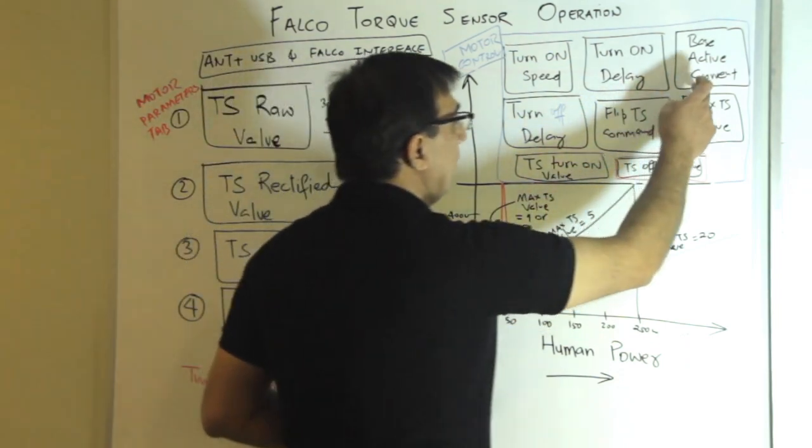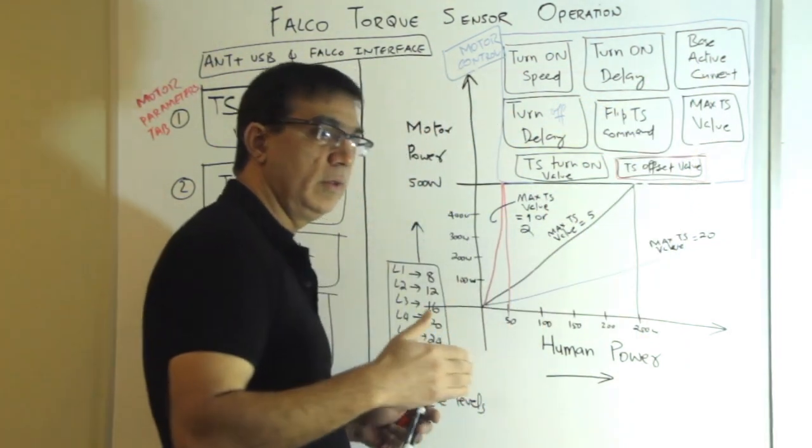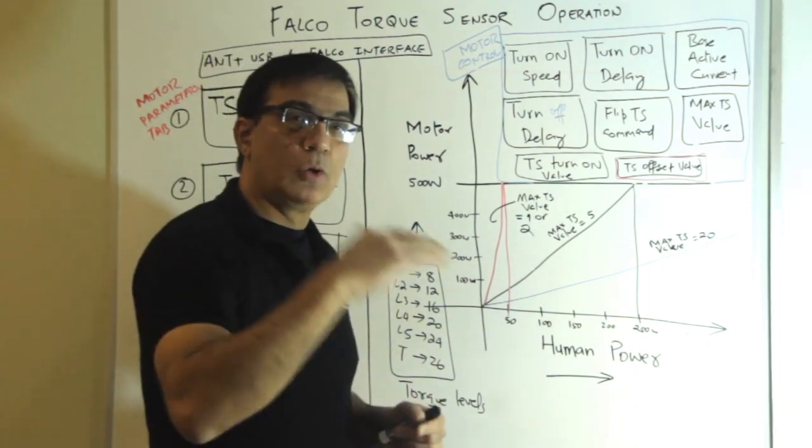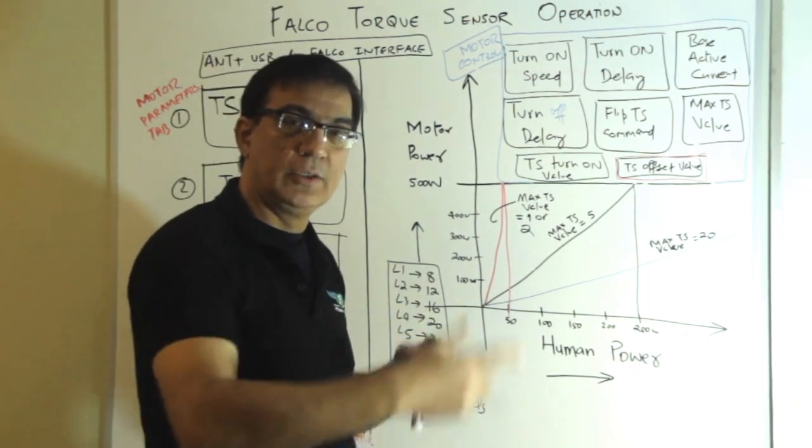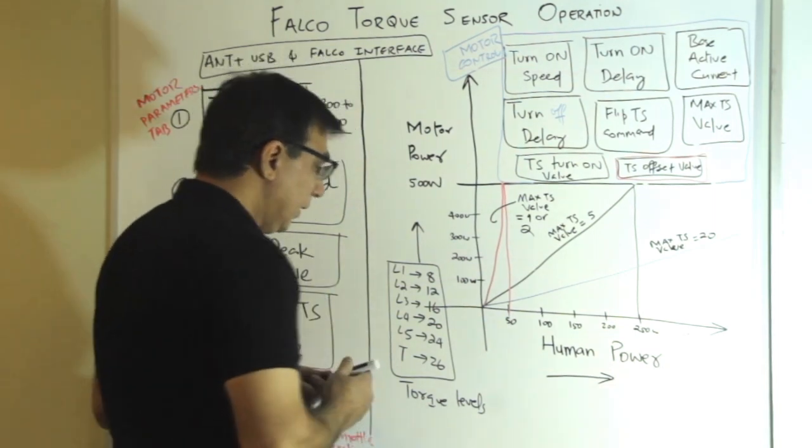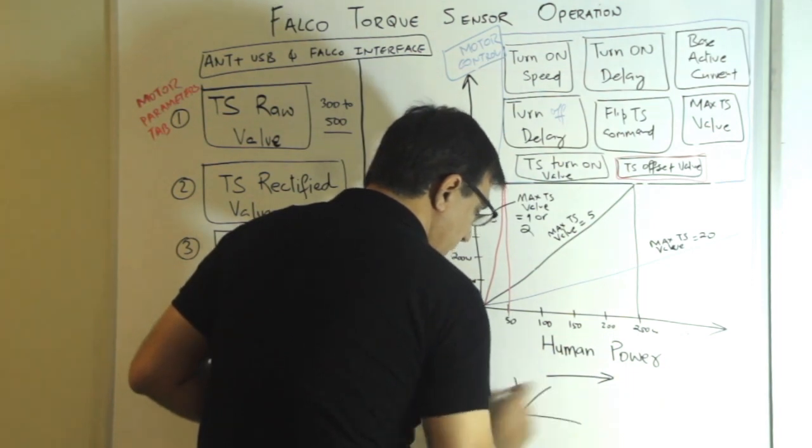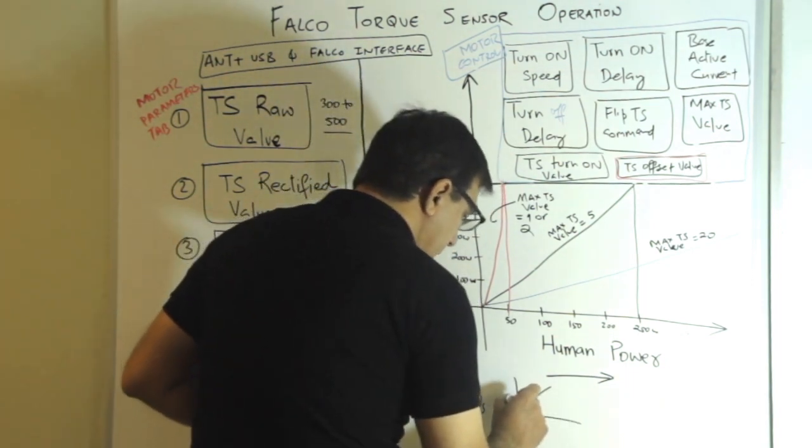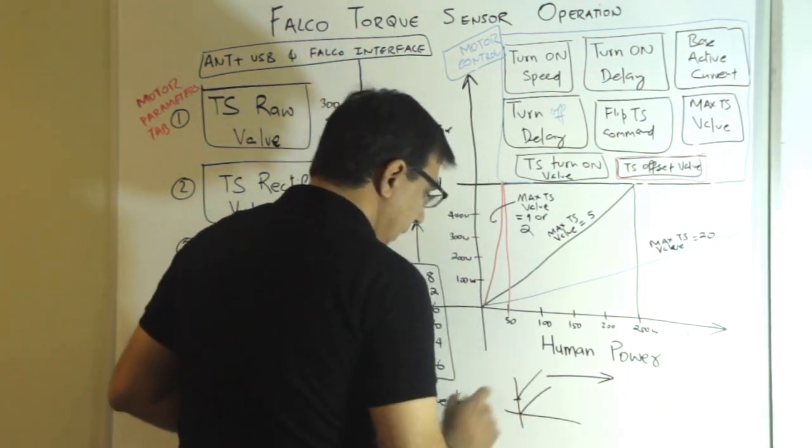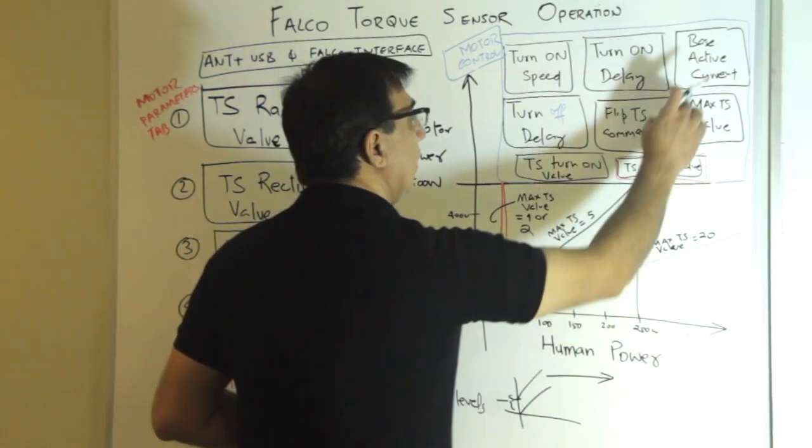Base active current is, you can start the motor with a higher torque when the torque sensor turns on. Now you could say that if I start cranking, I have two options. I can crank from zero or I could crank from a number. This difference here is defined by the base active current.